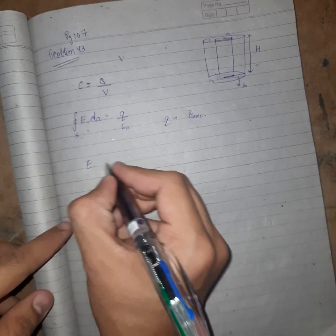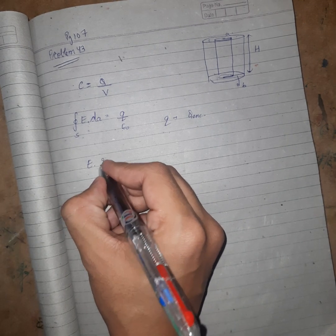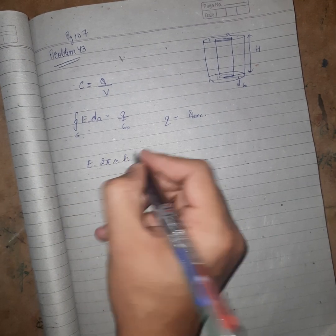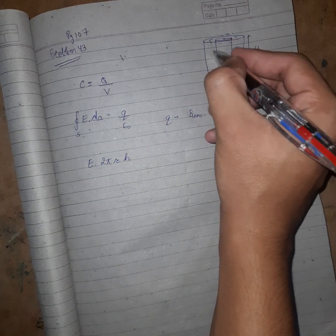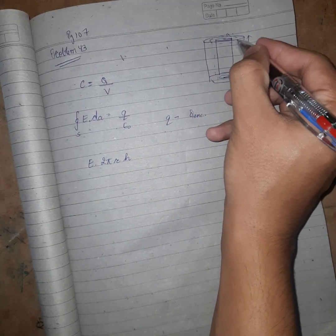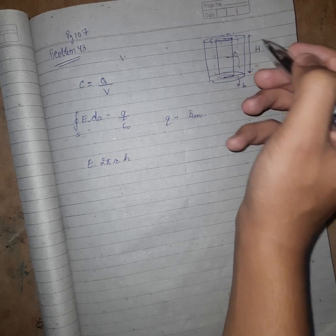Let r be the radius of that Gaussian surface we are considering, the cylindrical Gaussian surface with radius r. So 2πr into capital h and Q enclosed upon ε₀.